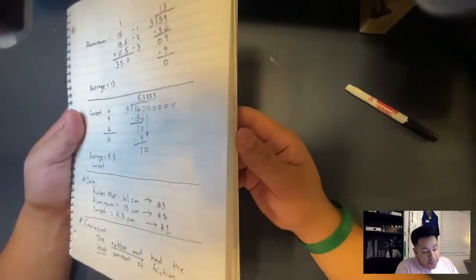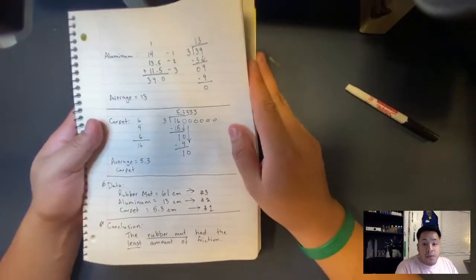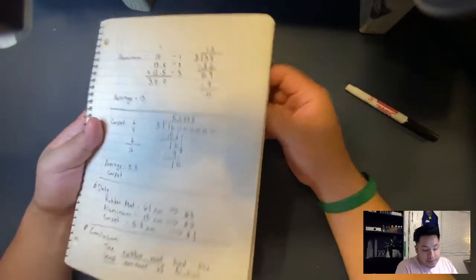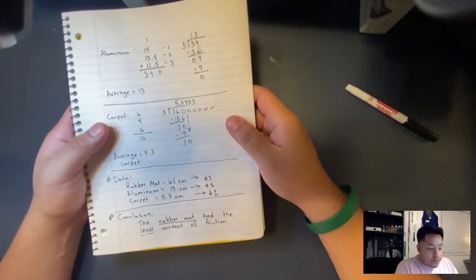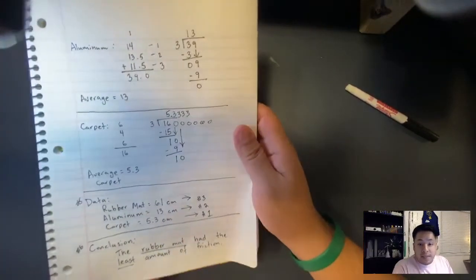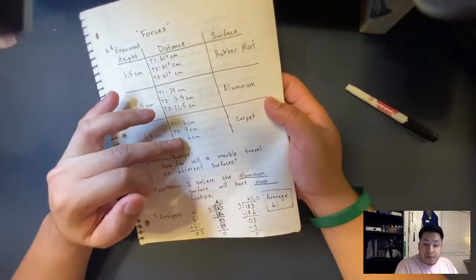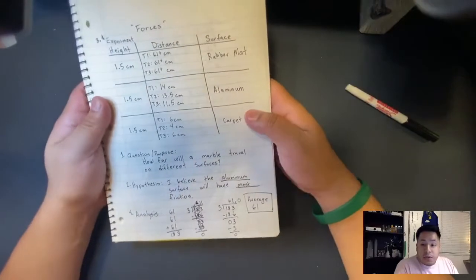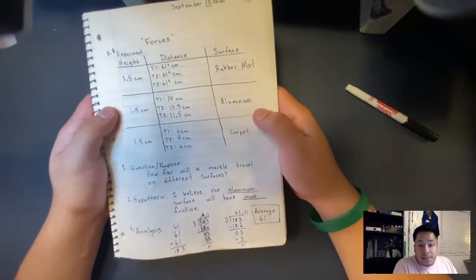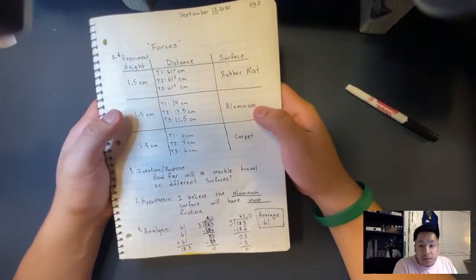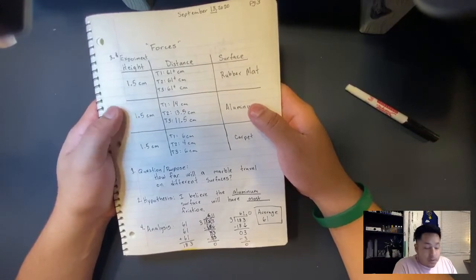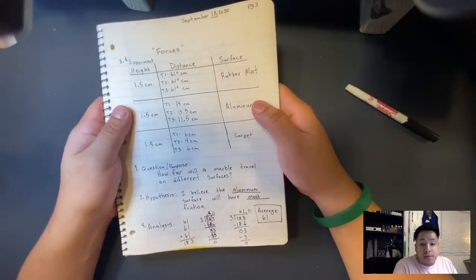If you guys want to try this experiment at home, you can do so using different surfaces. You don't have to use a marble. You don't have to use the same height as I did. Your distance may be different. But I want you guys to try this at home. Try this simple experiment talking about friction. Friction is a force. And I want you guys to try it out. Okay, boys and girls?